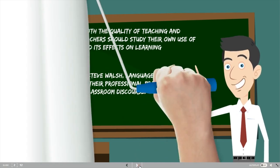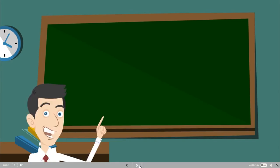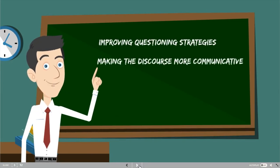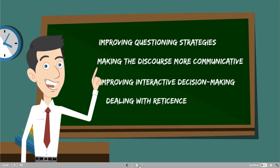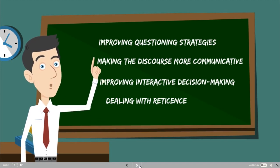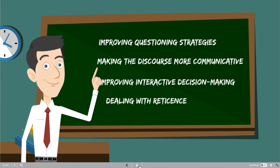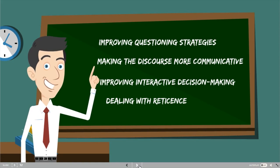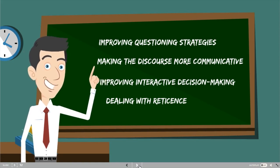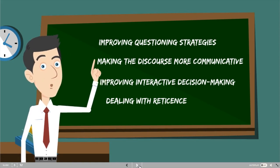Steve Woj suggests four strategies to improve quality of teaching and learning: first, by improving questioning strategies; second, by making the classroom more communicative; third, by improving interactive decision-making; and finally, by dealing with reticence. We will get to each one of these strategies in detail.